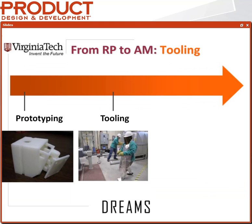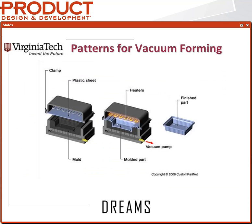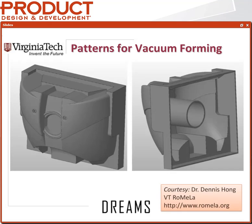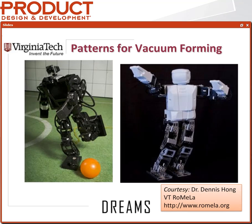Moving on to tooling. One easy application is vacuum forming, where we use a mold to form plastic sheets into components. Dr. Dennis Hong at the RoMeLa Lab needed a chest plate for one of his soccer-playing robots. We used an FDM machine to print the mold for that chest plate, transforming the robot's appearance and making it much more aesthetically pleasing. You can also use high-temperature Objet material for this — a very quick and easy way to make high-quality molds for vacuum forming.